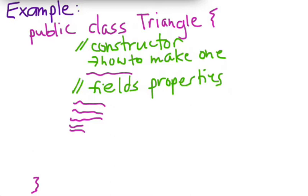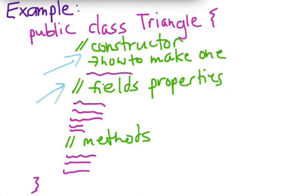And the last thing that classes have are a set of methods. These are the actions that you can take on objects of this class. So methods for the triangle class might be things like how to draw the triangle, how to shrink the triangle, how to move the triangle, anything like that. And they can operate on objects of this class triangle. So that's how you create a class description. It's going to have those three major components: the constructor, the fields, and the methods.